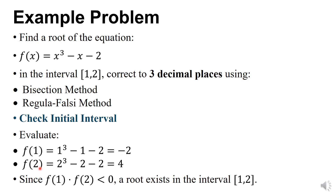The value of f(b) is 4. If -2 is multiplied by 4, we get -8, which is less than 0. So this confirms the root exists in the interval [1, 2].